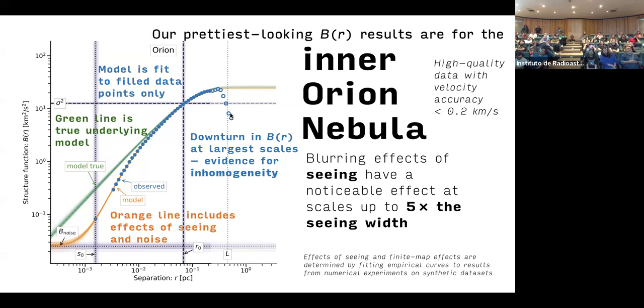Here we see a downturn for the larger scales, which is evidence that the fluctuations are more intense in the center of the nebula than the outskirts.